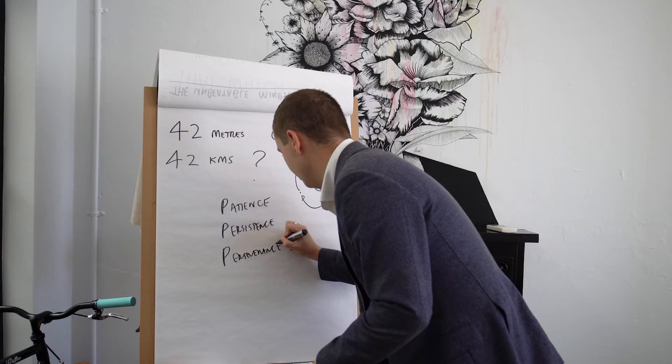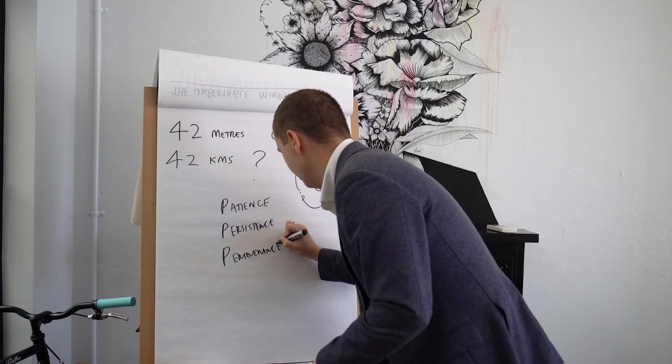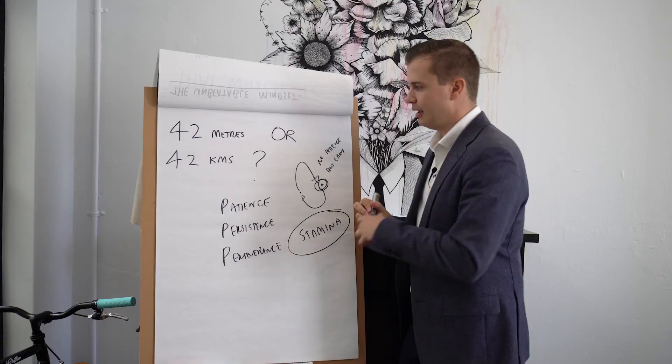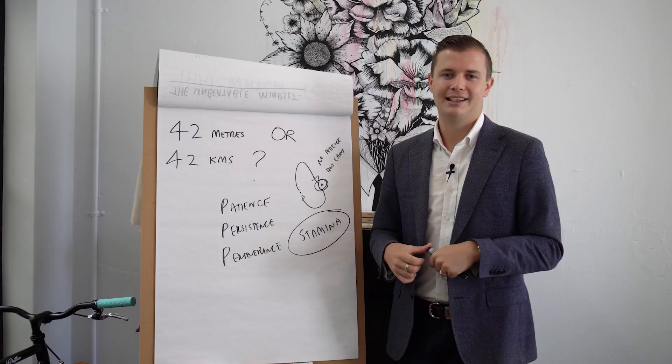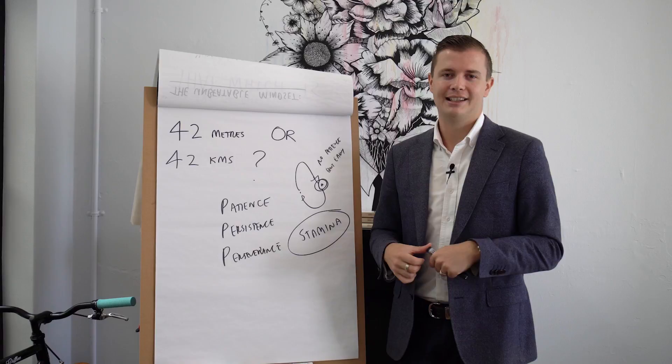and then there's perseverance. Meaning, how well can you embrace stamina? Because let's face it, I'm sure the people running 42 kilometers, there's plenty of times during that race where they go, I'm done, I'm exhausted. They want to quit, but they don't. And that's the difference here, team. Embrace these three P's.